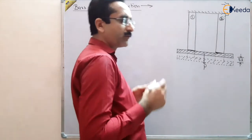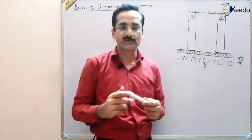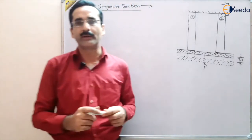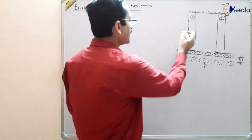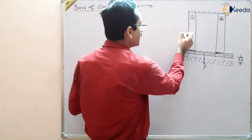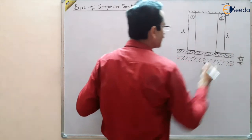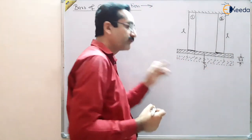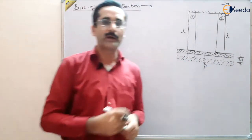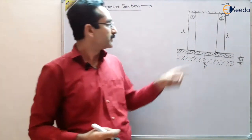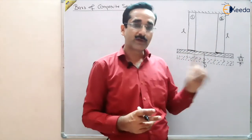Since deformation is the same, and strain is deformation per unit length, if we suppose the length of both bars is also L, then the strain will also be the same. The deformation of both bars is the same, and therefore the strain is the same in these two bars.